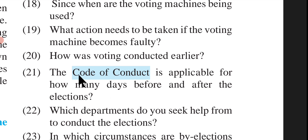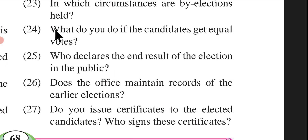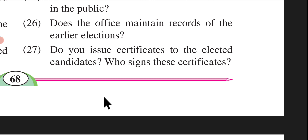What action needs to be taken if the voting machine becomes faulty? How was voting conducted earlier? The code of conduct is applicable for how many days before and after the elections? Which departments do you seek help from to conduct the elections? In which circumstances are by-elections held? What do you do if the candidates get equal votes? Who declares the end result of the election in public? Does the office maintain records of earlier elections? Do you issue certificates to the elected candidates, and who signs these certificates?